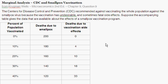Okay, welcome. This is a marginal analysis question taken from Krugman and Wells, Microeconomics, 2nd edition, Chapter 9, Question 9. It's like the CDC smallpox vaccination example. It's pretty straightforward, so I'll go through it pretty quickly, but hopefully if you're clicking on this, you probably have some questions. So let's go through it.